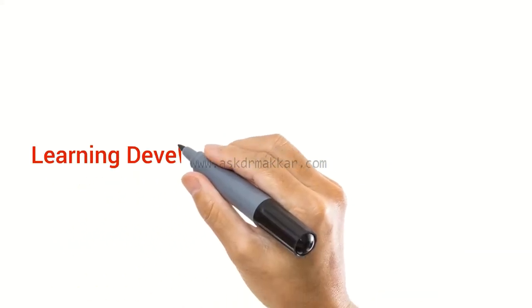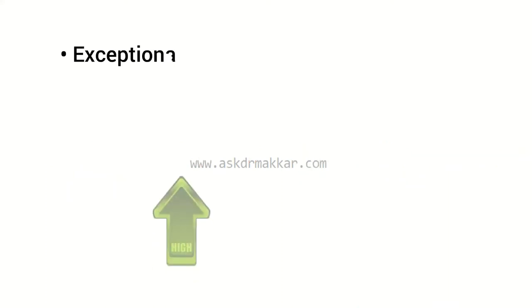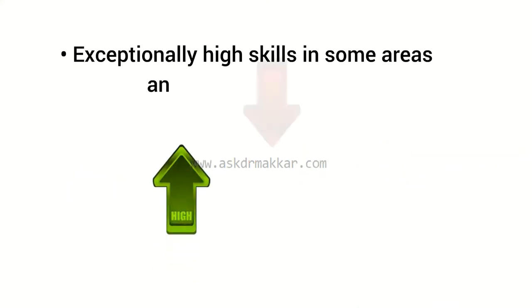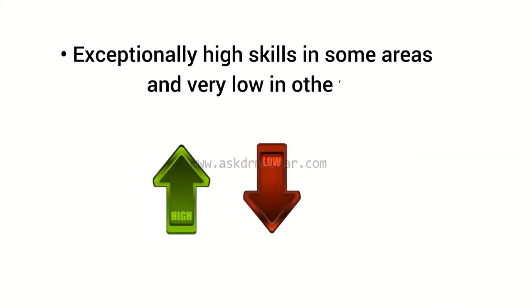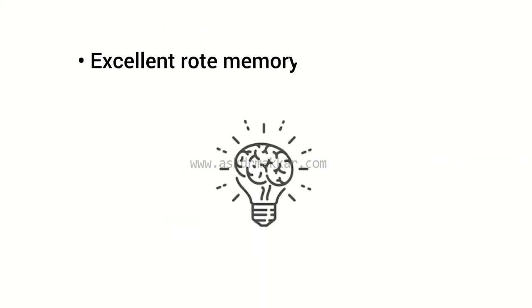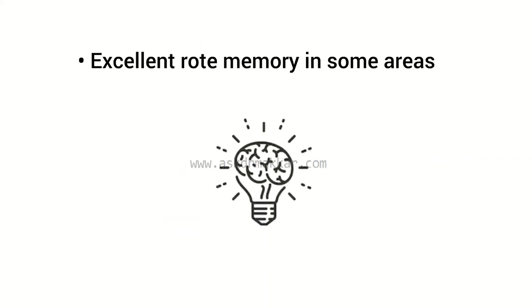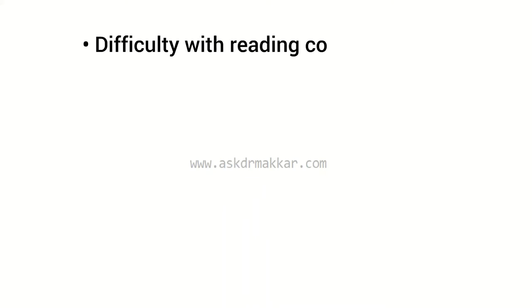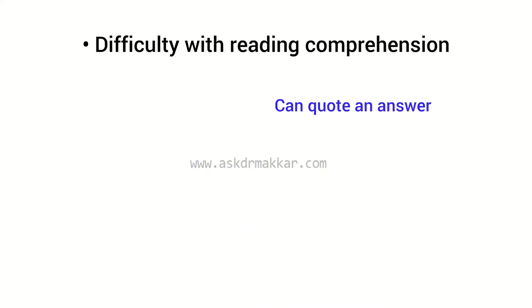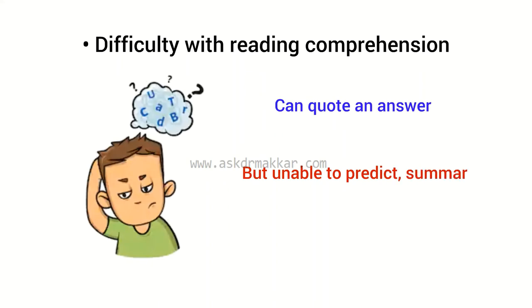Learning development signs and symptoms: exceptionally high skills in some areas and very low in others; excellent rote memory in some areas; difficulty with reading comprehension — can quote an answer but unable to predict, summarize, or find symbolism.